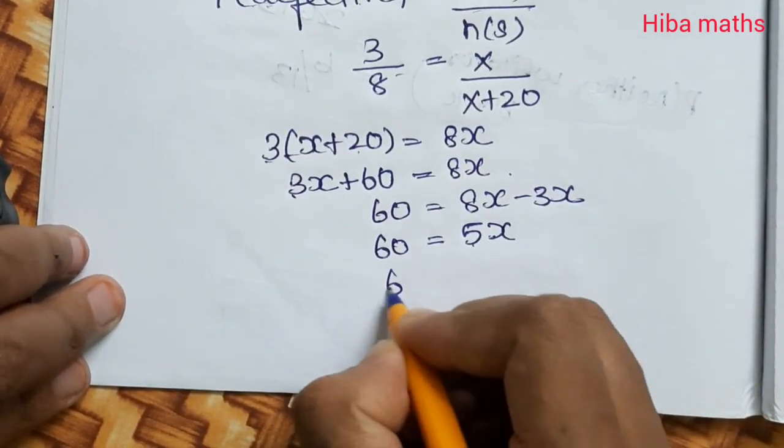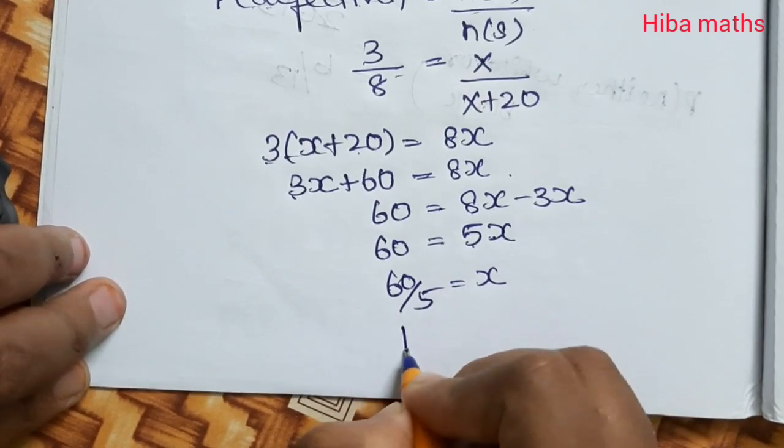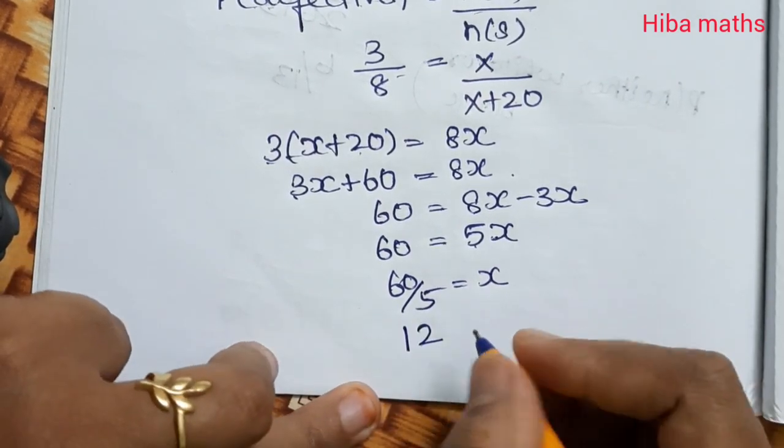Dividing by 5: x = 12. 5 times 12 is 60.